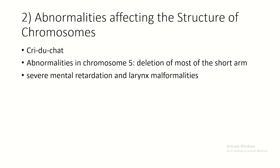The other type of chromosomal abnormality is in the structure of the chromosome. An example is Cri-du-chat syndrome, where there is a deletion of most of the short arm of chromosome 5, and the child suffers from severe mental retardation and larynx malformation.